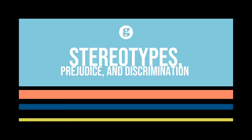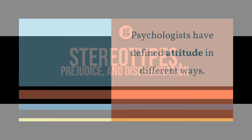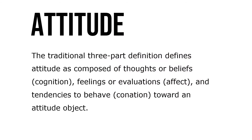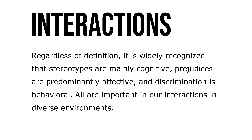Let's take a look at stereotypes, prejudice, and discrimination. Psychologists have defined attitude in different ways. The traditional three-part definition defines attitude as comprised of thoughts or beliefs (cognition), feelings or evaluations (affect), and tendencies to behave (conation) towards an attitude object. It's widely recognized that stereotypes are mainly cognitive, prejudices are predominantly affective, and discrimination is behavioral — all are important in our interactions in diverse environments.